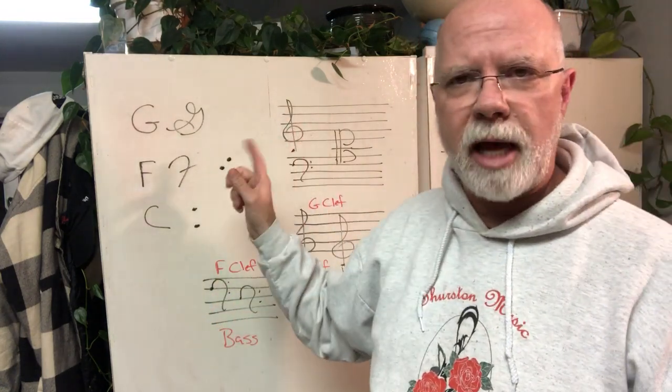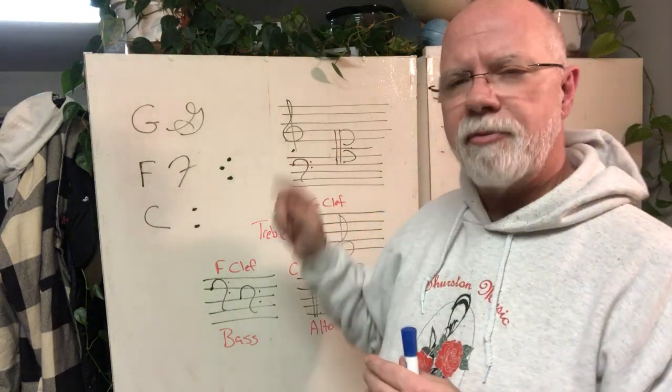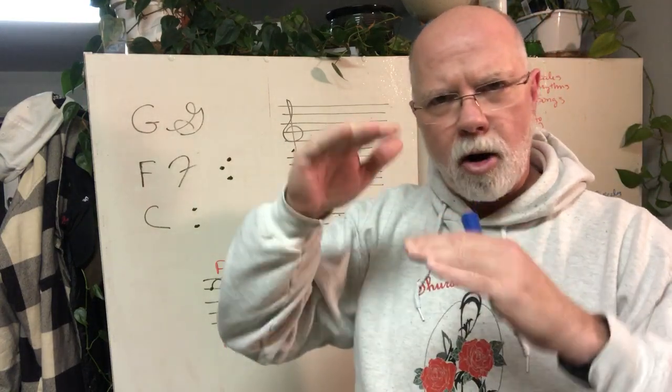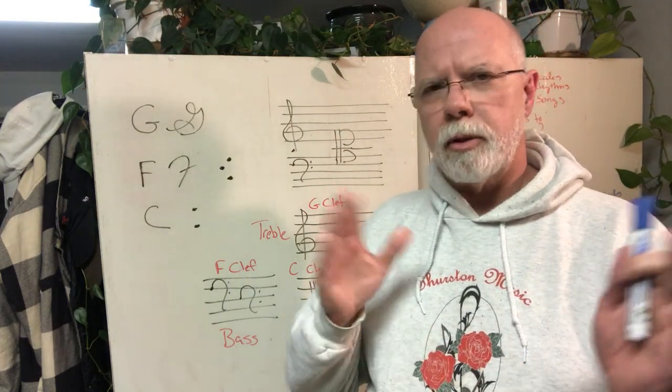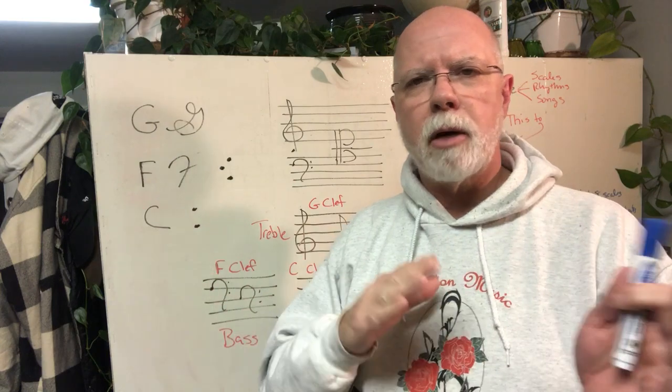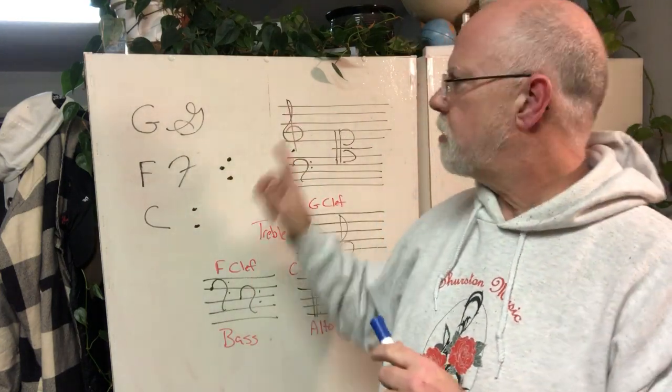These five lines are called a staff, and that's where we place our notes. The clef's main purpose is to tell you what the note names are and where they are on the line. For each clef it's a different order, although the note names are always A B C D E F G and they always stay in that same order. Where they are on the staff system is different depending on the clef.